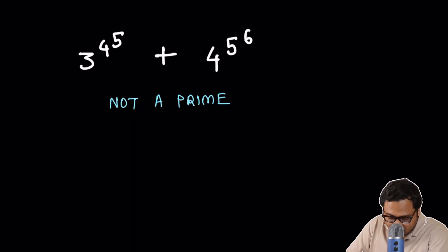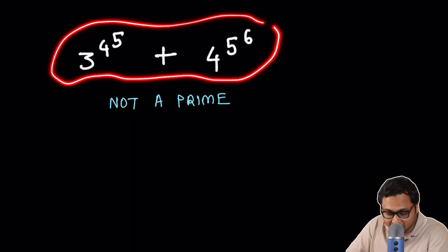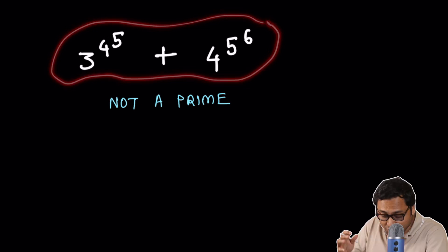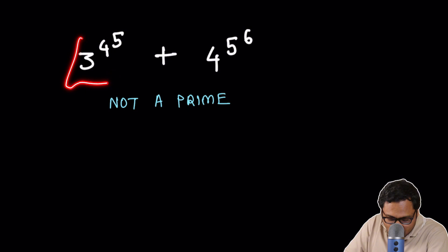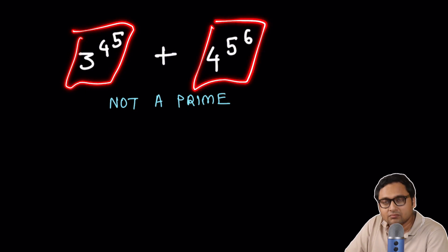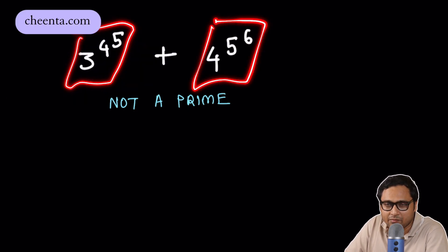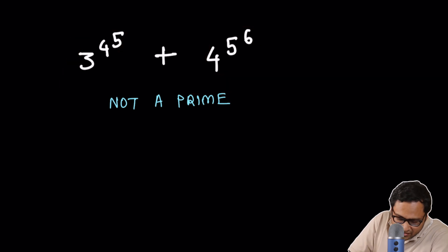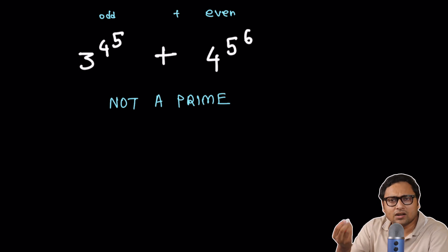Look at this number. It's a huge number of course. 3 to the power 4 to the power 5 plus 4 to the power 5 to the power 6. It's a huge number and this is an odd number and this is an even number. Powers of 3, odd number. Powers of 4, even number. So if you add even and odd, this is odd, this is even. If you add them, you will get an odd number.